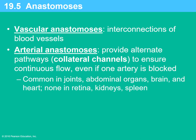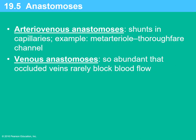Anastomoses are interconnections of blood vessels, sometimes found with arteries to ensure blood flow to a particular area if one artery gets blocked. This is common in joints, abdominal organs, the brain, and the heart. Arteriovenous anastomoses or shunts in the capillaries involve various branches so that if one small true capillary gets plugged, blood flow is maintained. In veins, anastomoses are very abundant so that a blocked vein usually won't totally block flow.